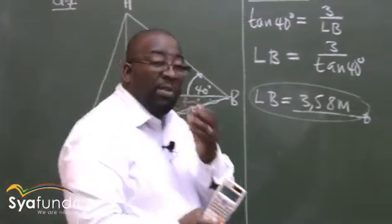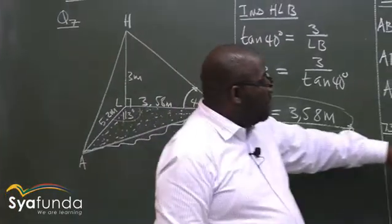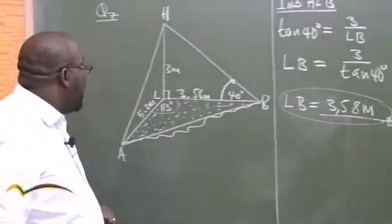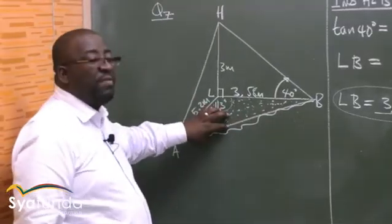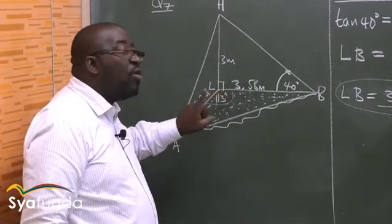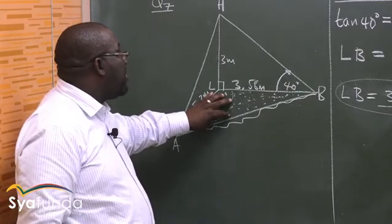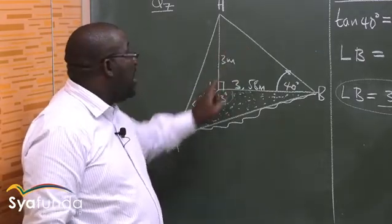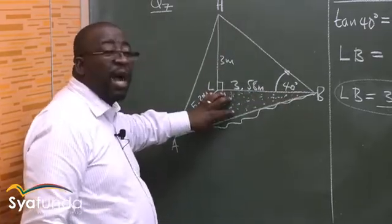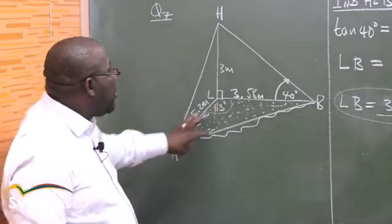The last part of this problem asks us to find the area of triangle ABL. Let's look at triangle ABL. Does this triangle have 90 degrees? No, it doesn't. So I can't use trig ratios there. If it had 90 degrees, it would be easy — half base times perpendicular height. But I can't find perpendicular height here. Hence, I use the triangle formula — it is the solution to triangles without 90 degrees.